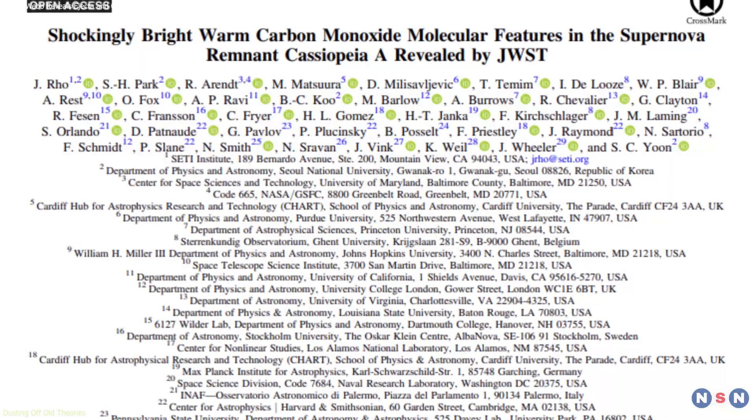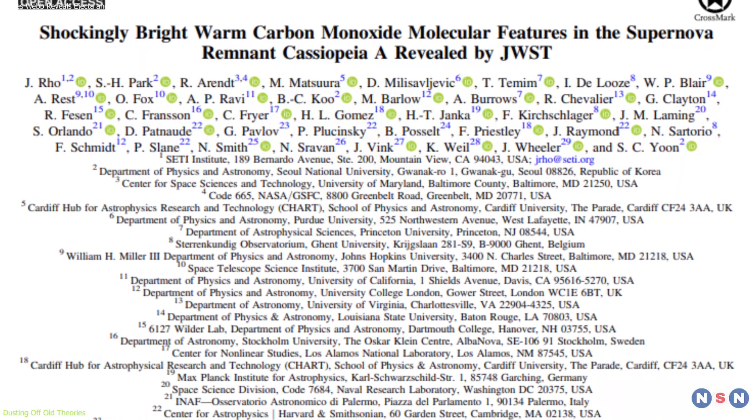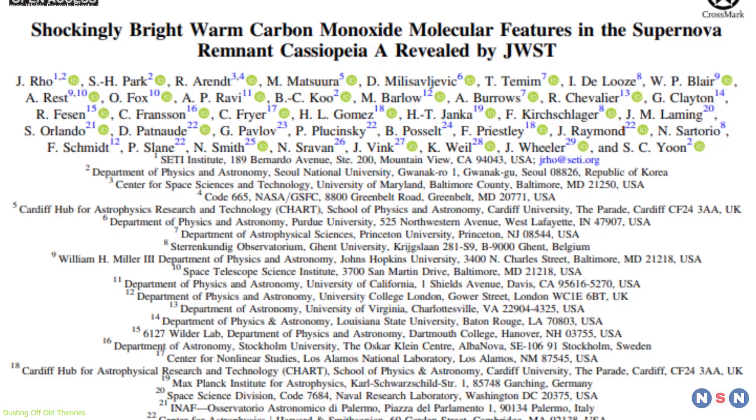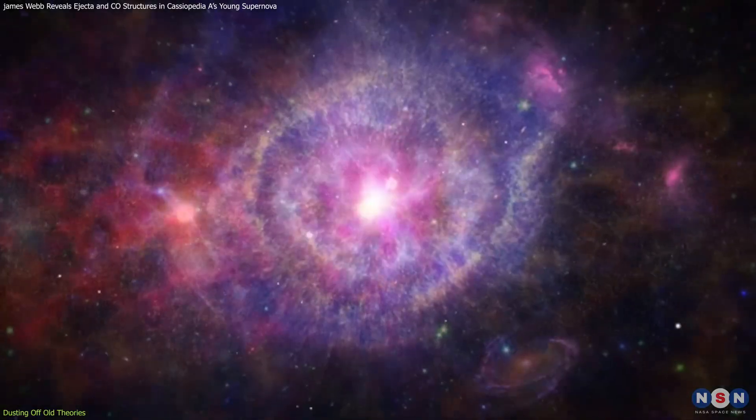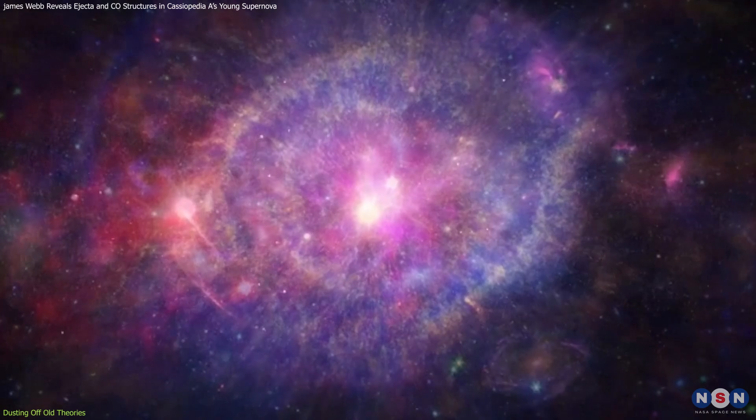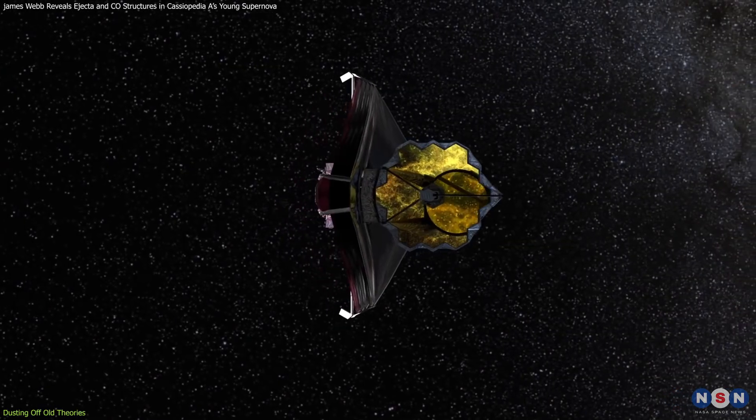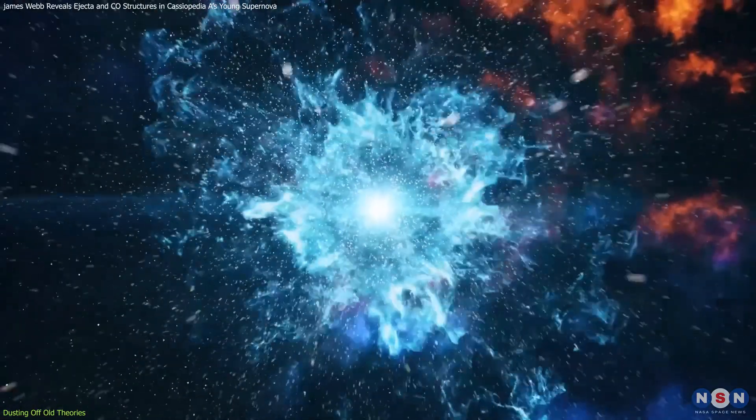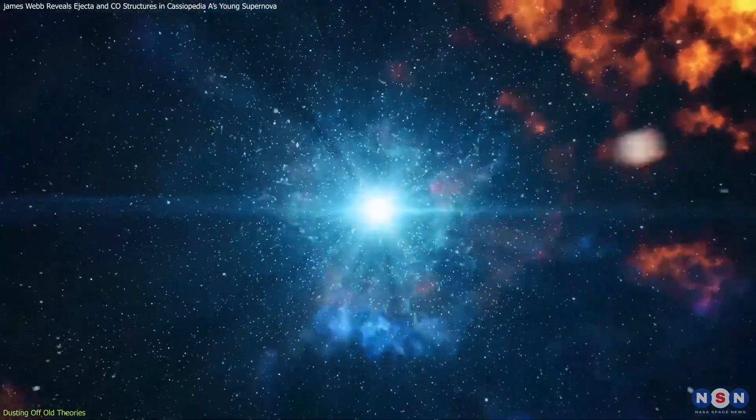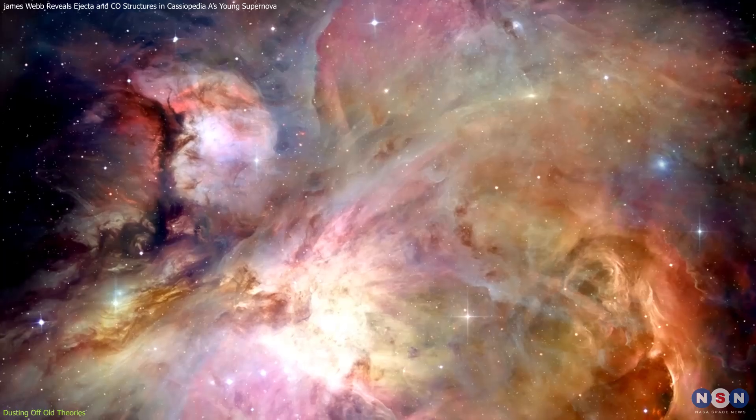The revelations from Cassiopeia A have significant implications for our understanding of how cosmic dust is formed, challenging the previously held belief that dust mainly originates from the slow and steady winds of aging stars. Instead, Webb's findings suggest that the violent deaths of massive stars, such as supernovae, play a pivotal role in dust production.